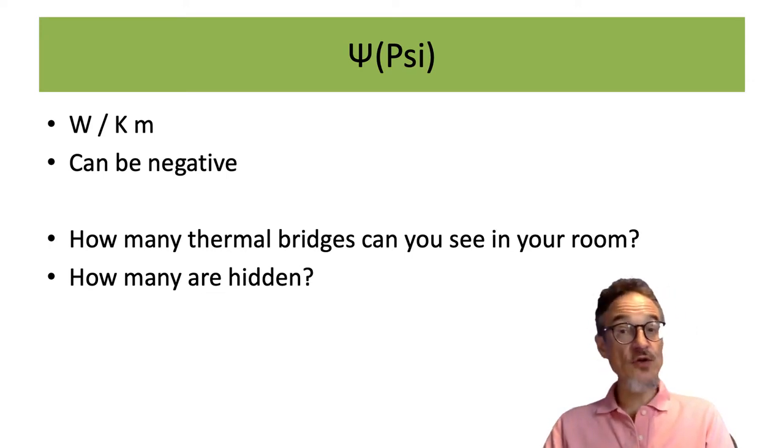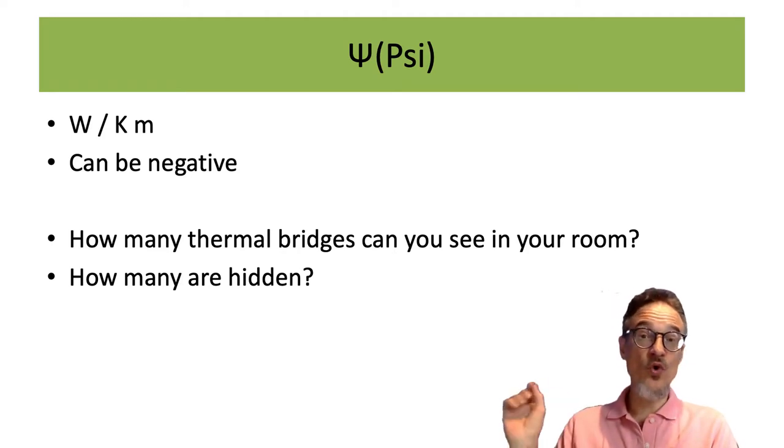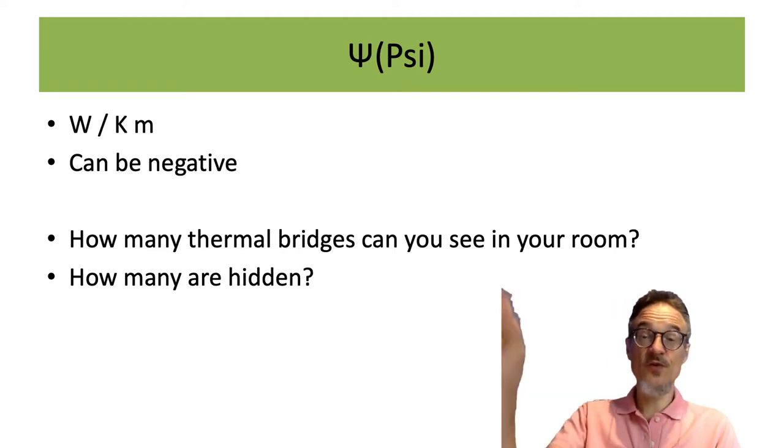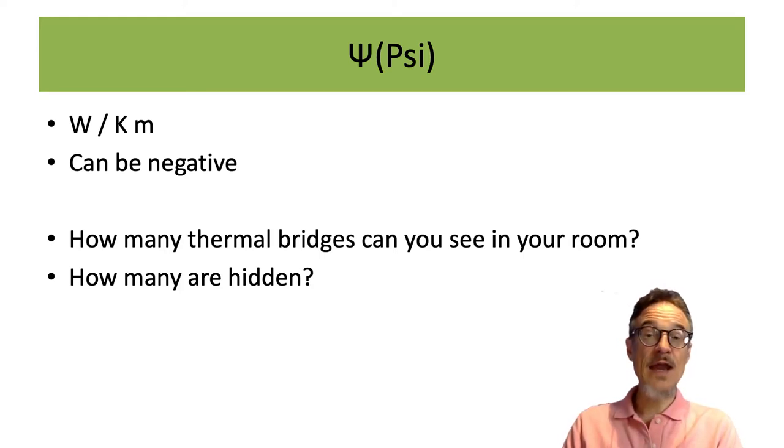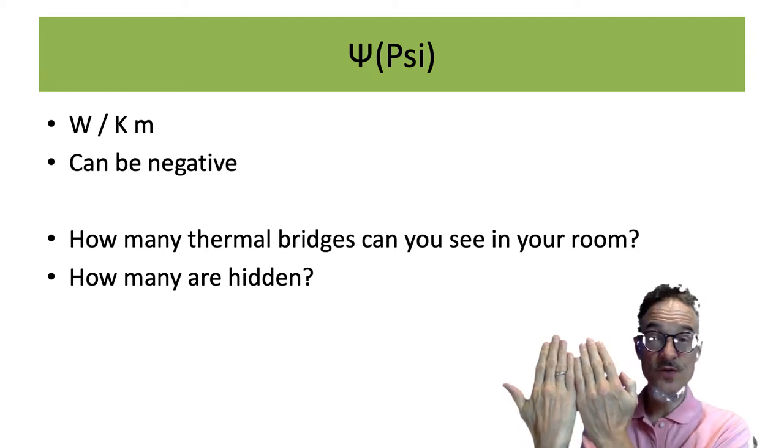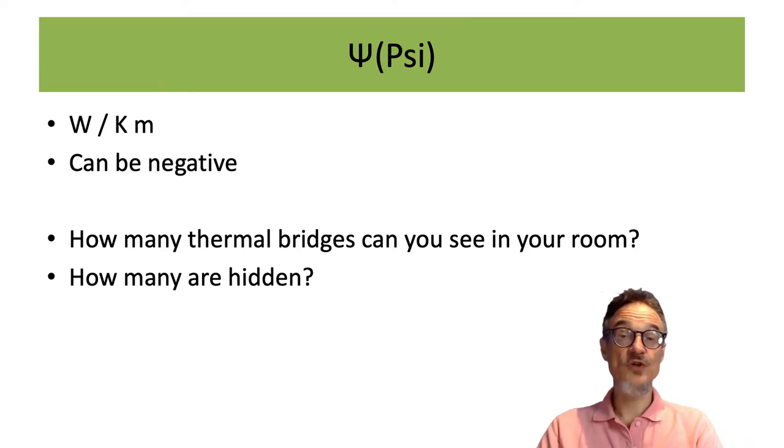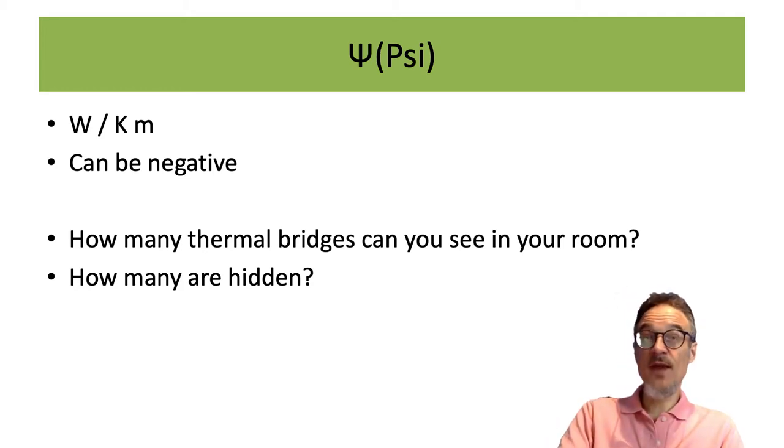So just look around your room, look around your house. How many thermal bridges can you see? So how many places around your room can you see where the wall is just one material that you can calculate? Here's the U value. And how many places around your room are there where you're joining together two different elements with two different U values? And there may be another extra heat loss from the joint. That's something we'll think about. That's something we'll talk about later.